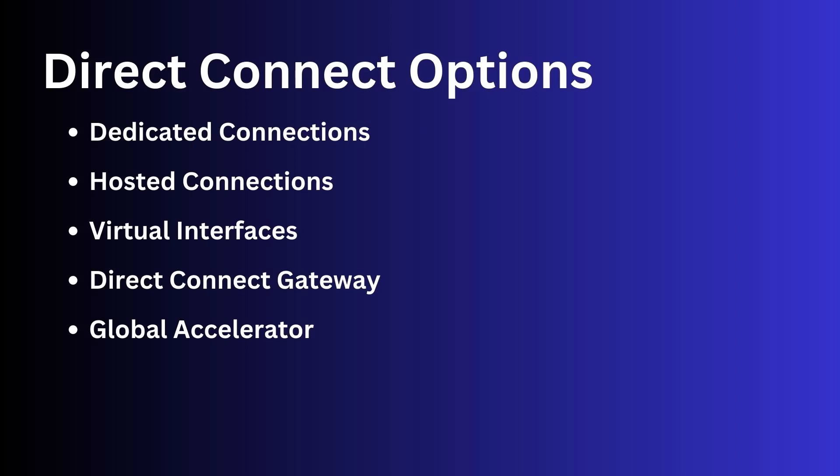Direct Connect Gateway: a Direct Connect Gateway is a virtual router that enables you to connect multiple VPCs and VPN connections to a single Direct Connect connection, allowing you to consolidate your network connectivity and simplify your network architecture. AWS Global Accelerator: a service that improves the availability and performance of your applications by routing traffic through AWS's global network infrastructure. You can use Direct Connect with Global Accelerator to provide dedicated private network connectivity between your on-premises data center and AWS services.